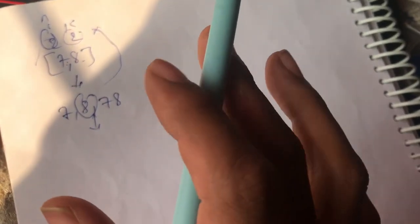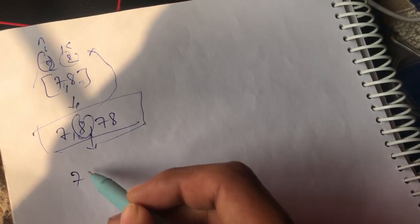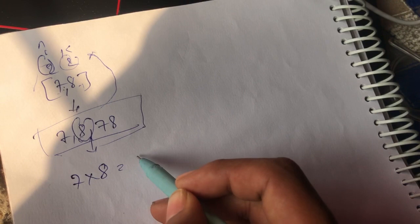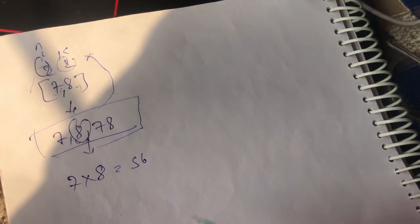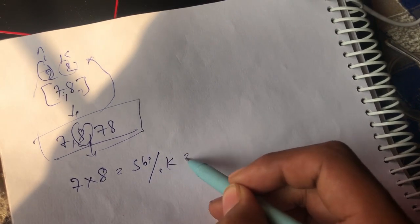It means if I multiply 7 into 8, it's going to give me 56, and if I now take the mod of k, then it's going to give me answer 0 because it is completely divisible by 2.